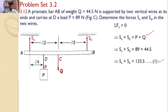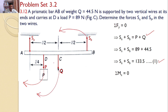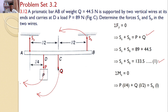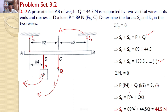Next, applying the second equilibrium equation by taking moments about point A. P will introduce a moment, Q will introduce a moment, and SB will introduce a moment in the opposite direction. P is at a distance of L/4, Q is at a distance of L/2, and SB is at a distance of L. Hence: P·(L/4) + Q·(L/2) = SB·L. On simplification, SB equals P/4 plus Q/2. Substituting the values, SB equals 44.5 N.